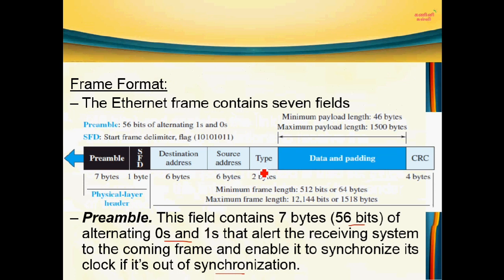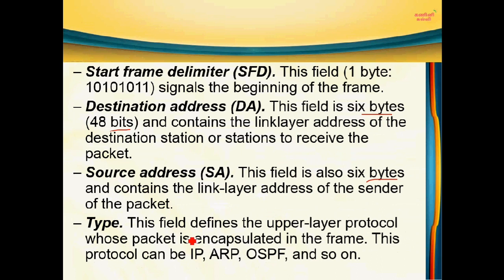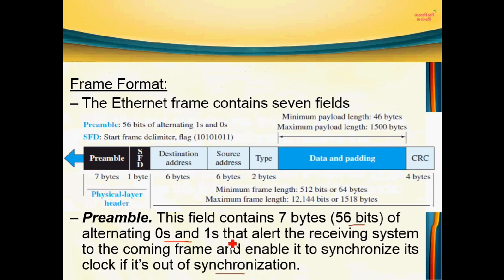Next, we have a type field, which is 2 bytes long. The type field defines the upper layer protocol whose packet is encapsulated in the frame. For example, the upper layer could be IP, ARP, or OSPF — these are network layer protocols — and the type field indicates which one is being used.